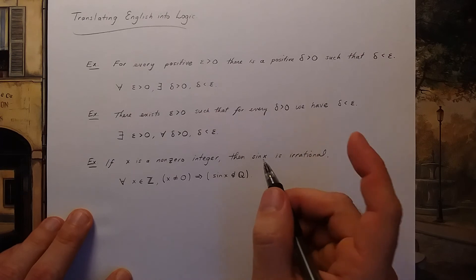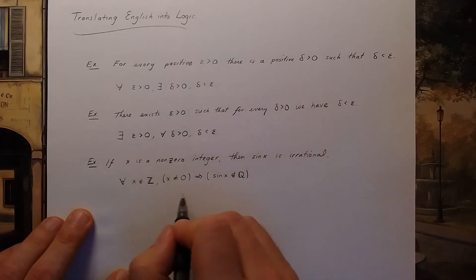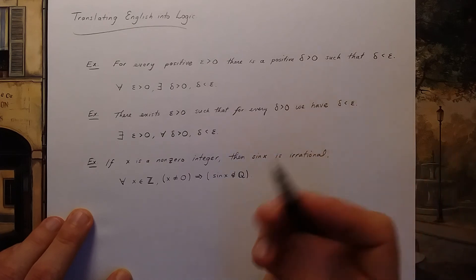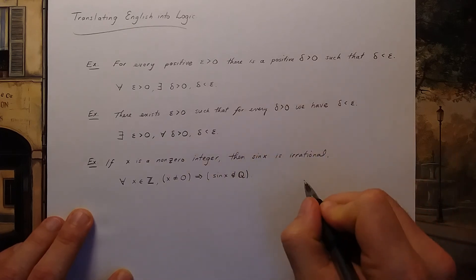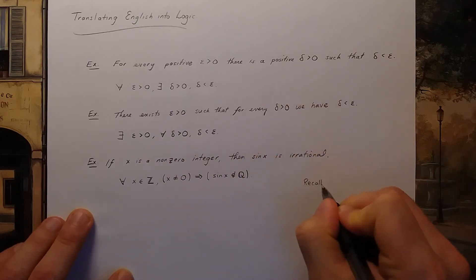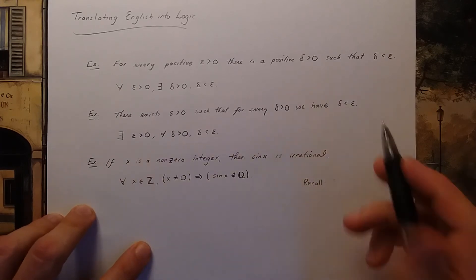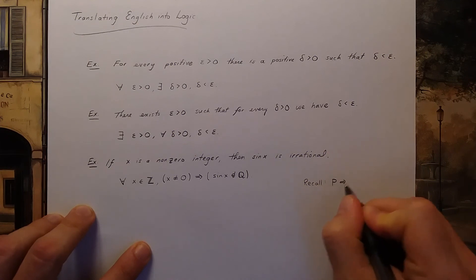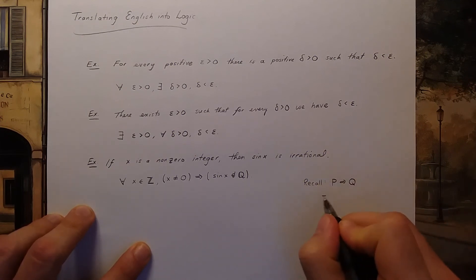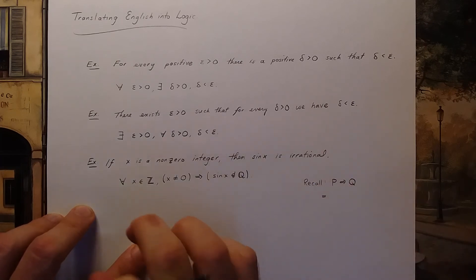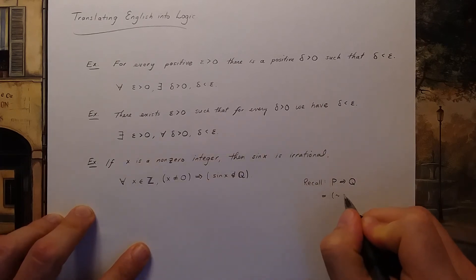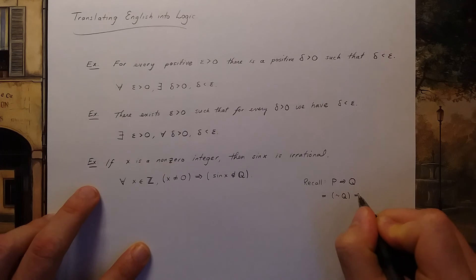So for this reason you could also rephrase this to the logically equivalent statement using the contrapositive. So recall the contrapositive: if you have p implies q, that is logically equivalent to the contrapositive not q implies not p.